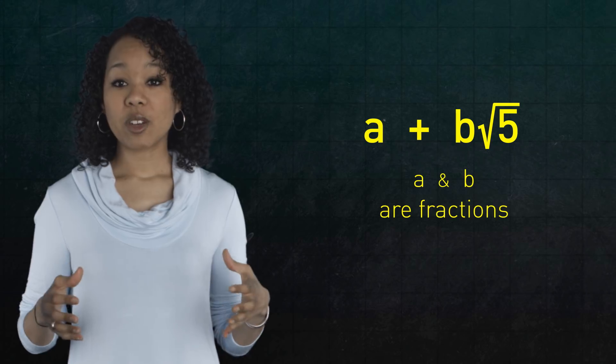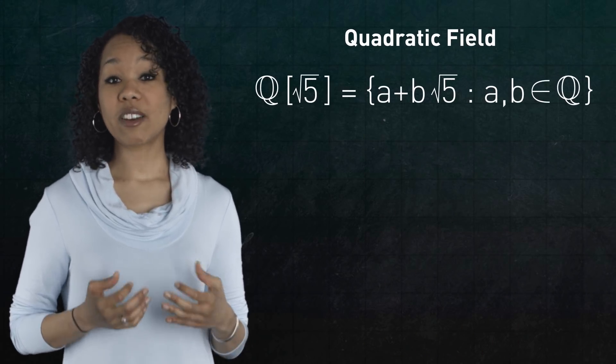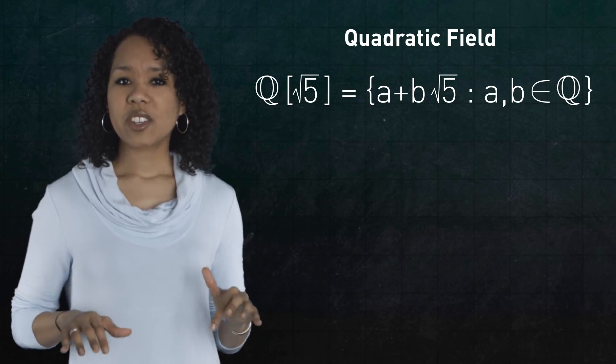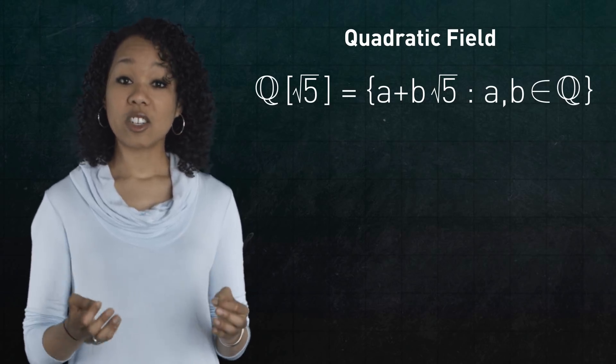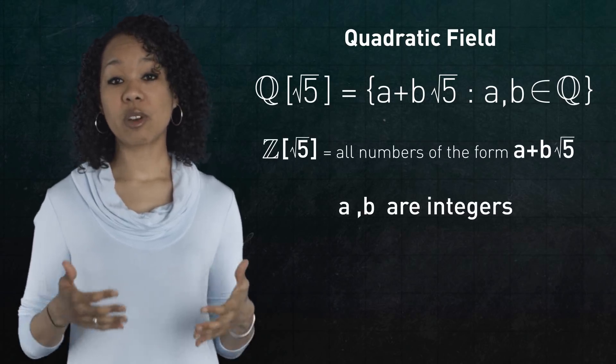The set of these numbers form what's called a quadratic field, which plays an important role in algebraic number theory. But for the rest of the episode, let's just focus on the case when a and b are integers. Collectively, we'll denote these numbers by Z adjoined square root of five.